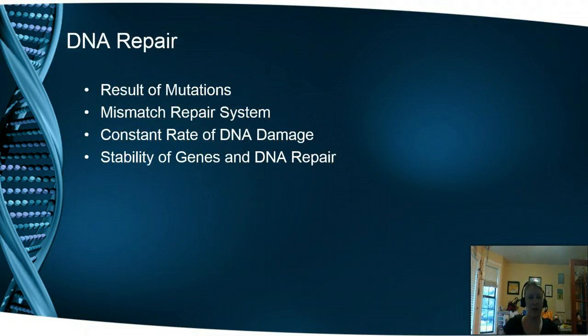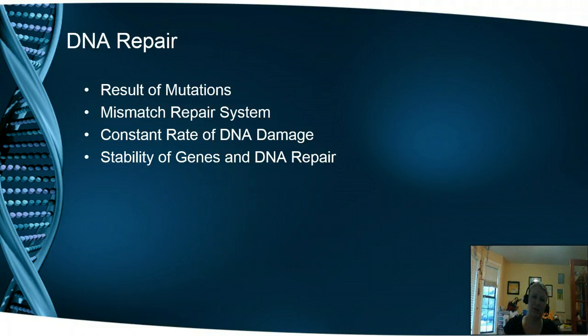We have three or four main sections we're going to talk about. We're going to talk about the result of mutations, the mismatch repair system, the constant rate of DNA damage, and then the stability of these genes and DNA repair.